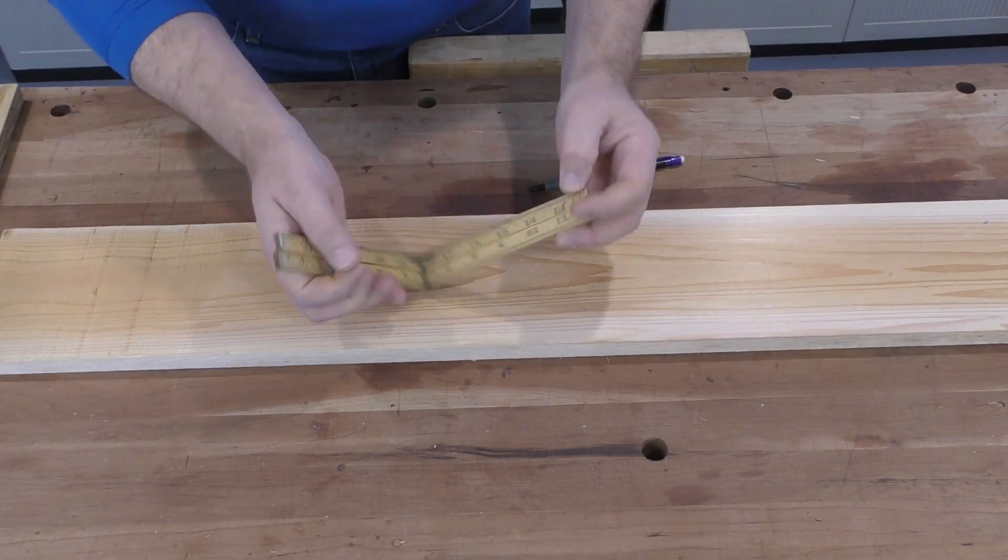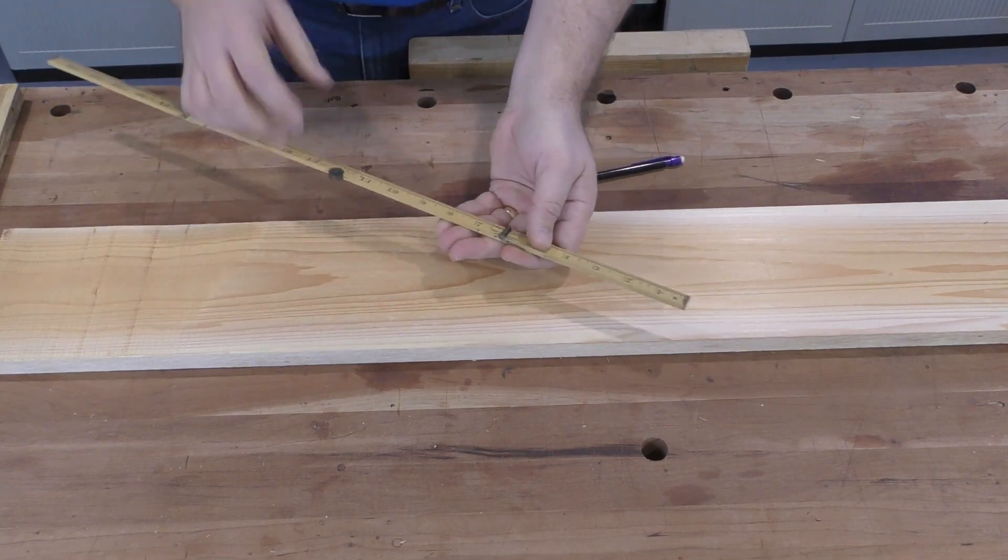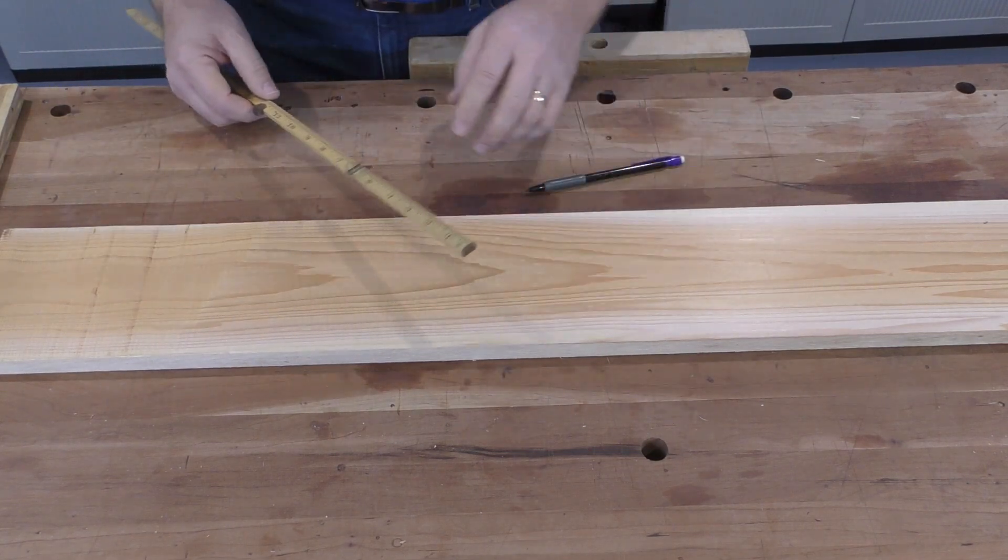Now, a wooden yardstick or a classic folding wood ruler like this one is ideal for doing this kind of layout.